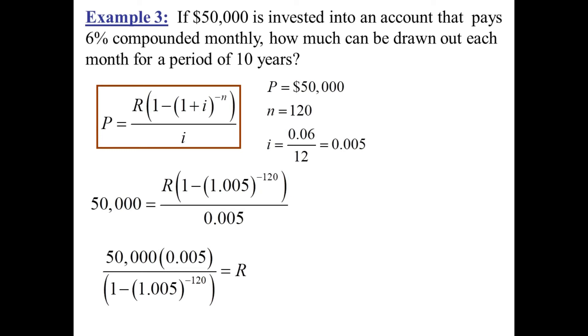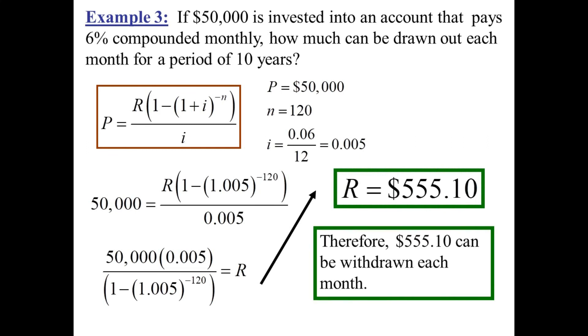Then we need to take our calculator and add this. Now, the calculator use is getting more complex. So, this might take some practice and calculators are different. So, do it yourself and find out that the amount of money that can be drawn out every month for 10 years is $555.10.